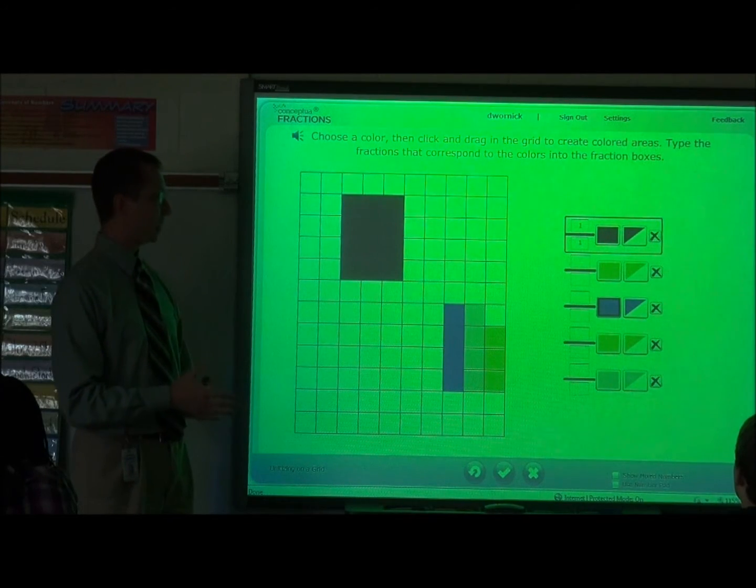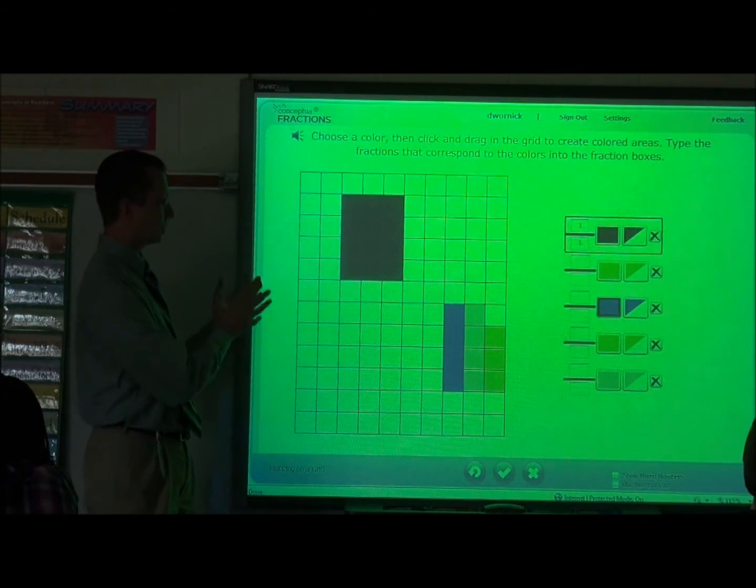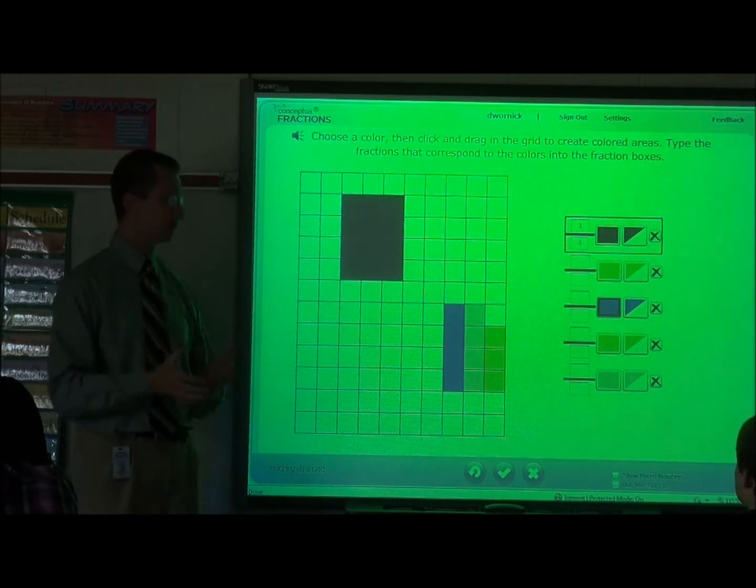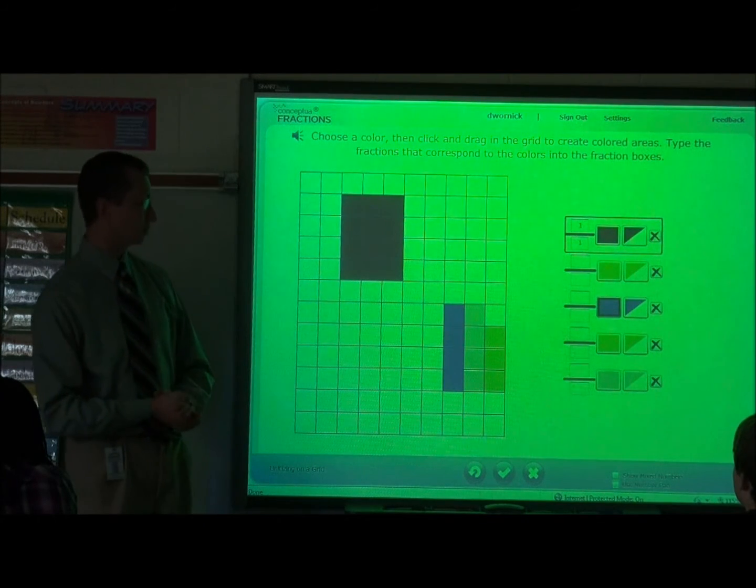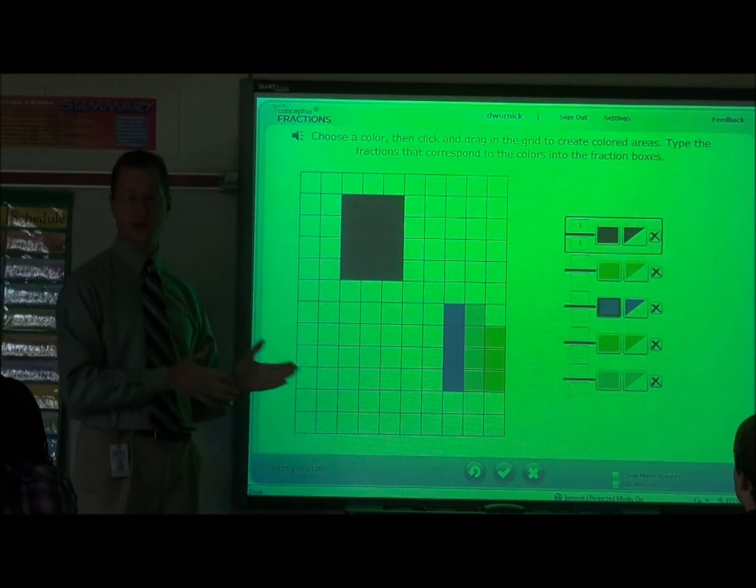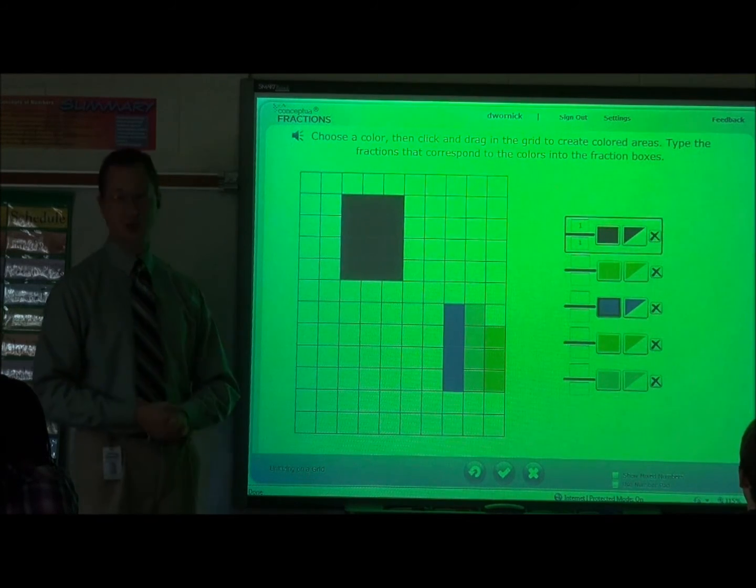And continue to think about what is the picture that we can see in our minds as far as switching these. When we do two thirds plus one fourth, we can picture that this would be twelfths. And what our array would look like, what our rectangular model would look like as well. And continue with this. We're going to continue with this tomorrow as we look at other types of addition and subtraction problems.